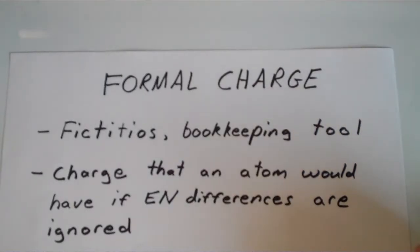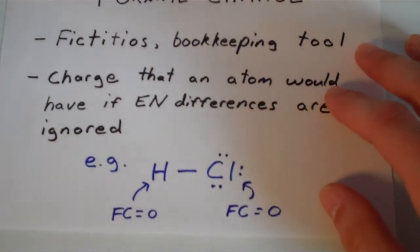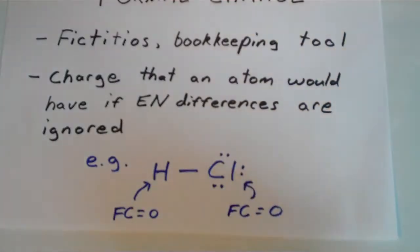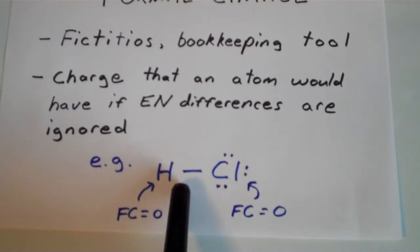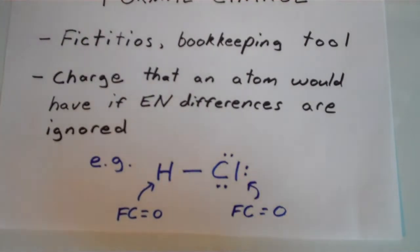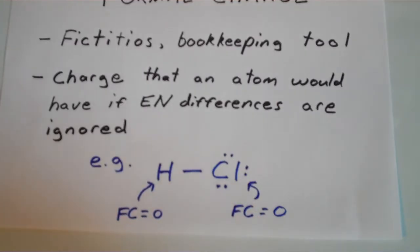Basically, formal charge is the charge that an atom would have if electronegativity differences are ignored. So in the case of hydrogen chloride, this bond is polarized towards the chlorine because it's more electronegative — chlorine hogs more of the shared electron density. However, when we calculate formal charges, the formal charges of both atoms turn out to be zero.